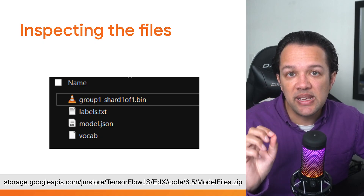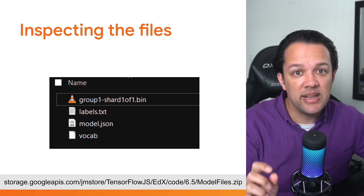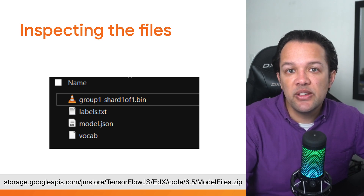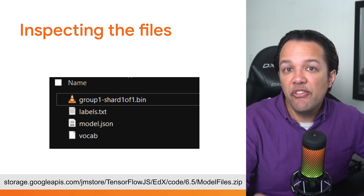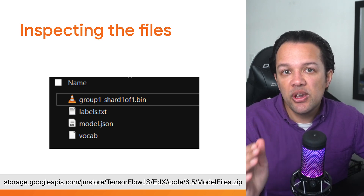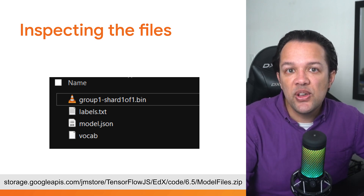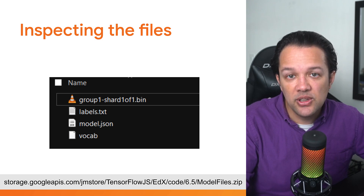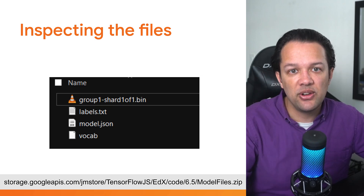First, if you've not done so already, unzip the files for the model you trained and downloaded in the previous section. You should see the following files contained within its various folders. If for some reason you had trouble generating these new files, you can go to the URL shown to grab the ones that I made in the prior session. Essentially, they should be the vocab and labels text files along with the standard model.json and binary files for the model itself, so four files in total.